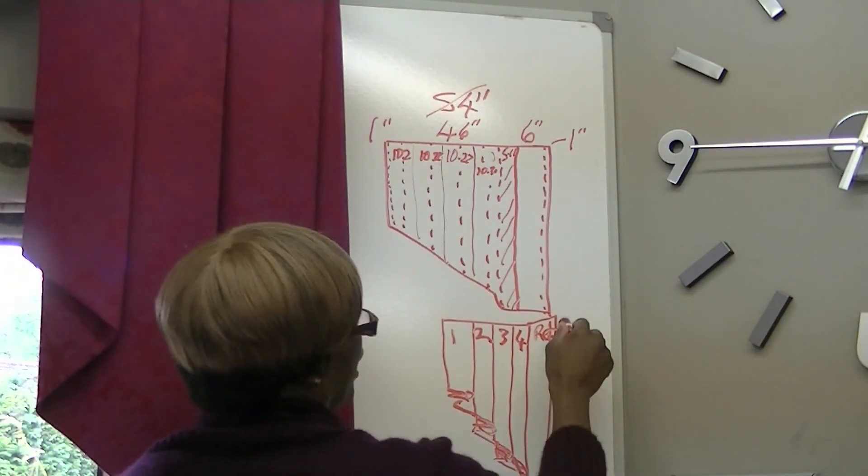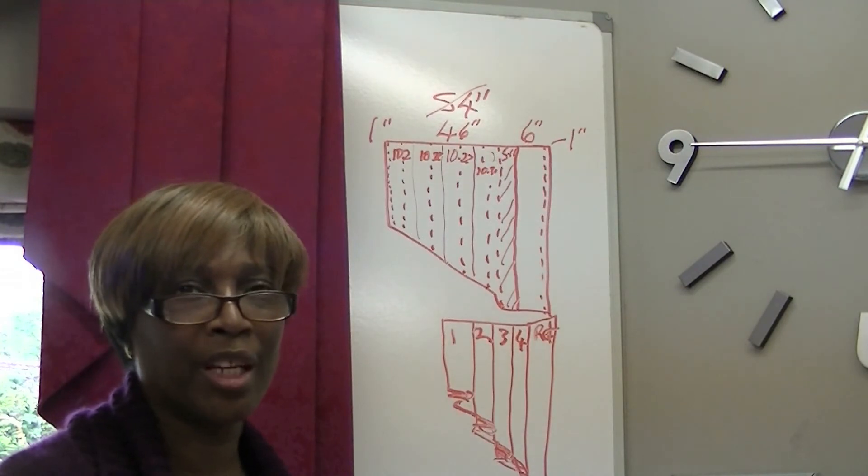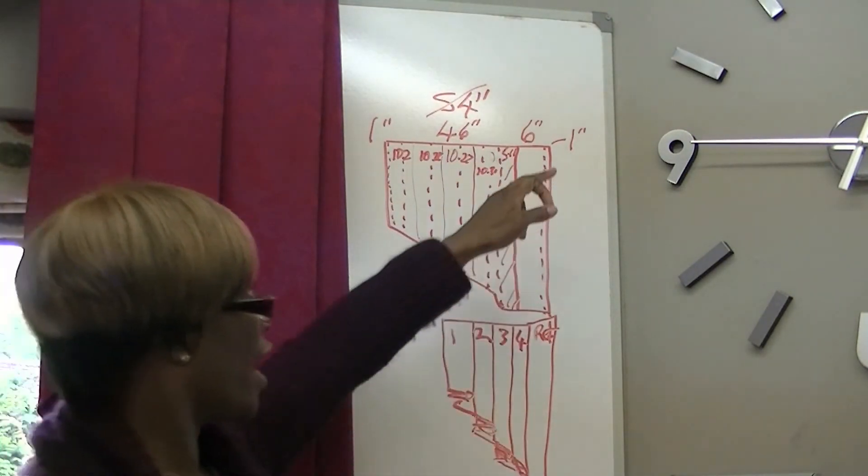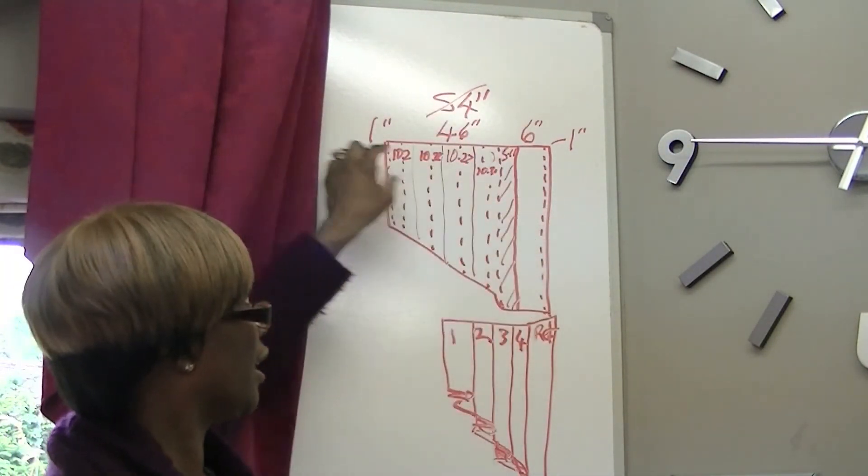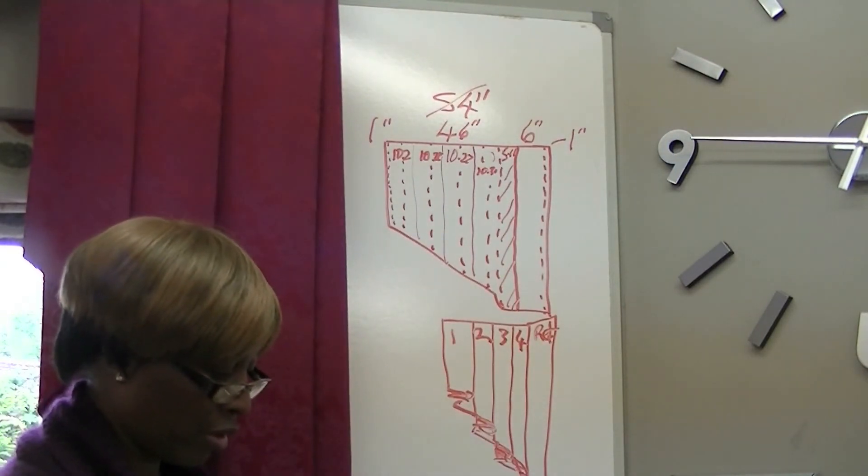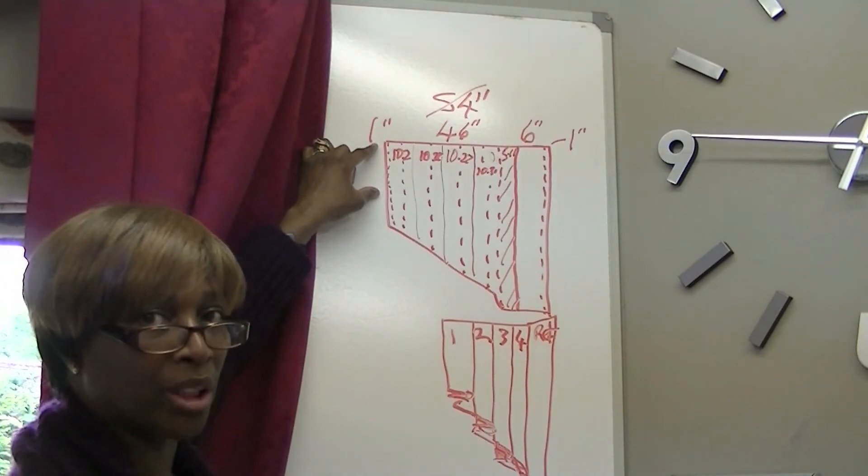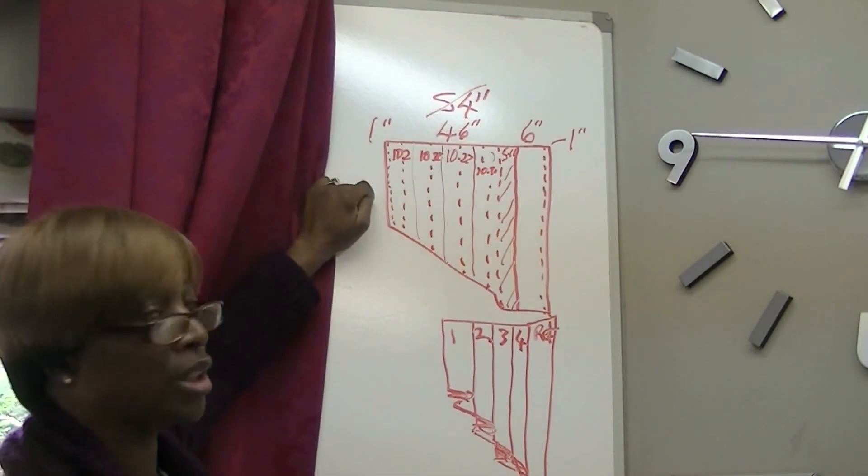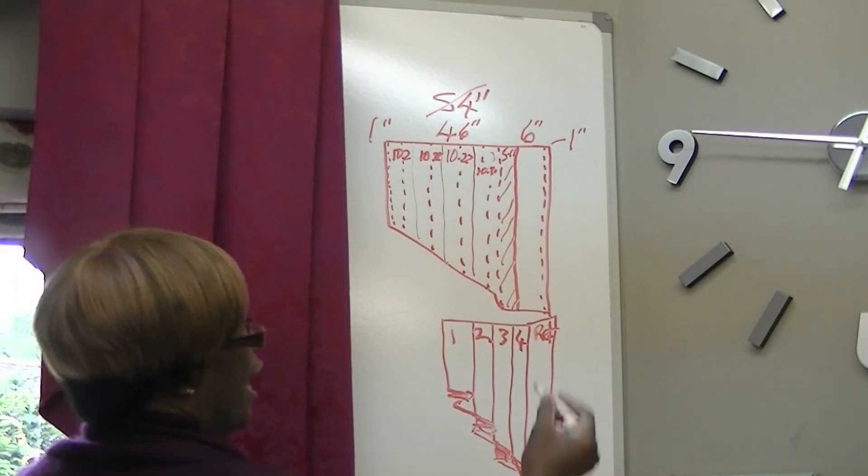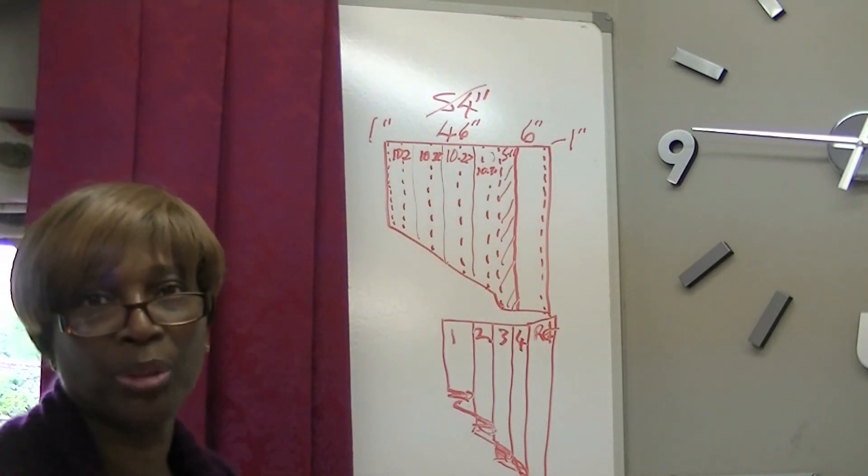This length here is determined by what you want. I believe I showed you that in the last video. If your window is 90 inches, you half it and get a tail of 45. From there, you half the 45, which is 22.50. If your swags are that size, make it 22.50. If not, whatever your swags is, you make that to match your swags.